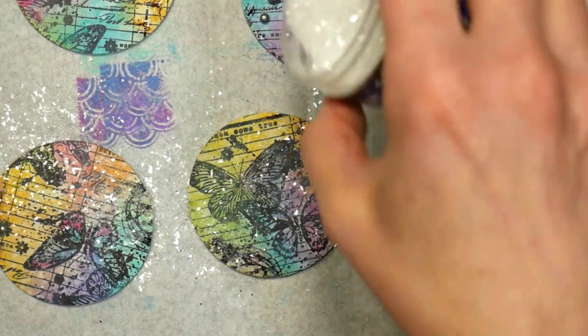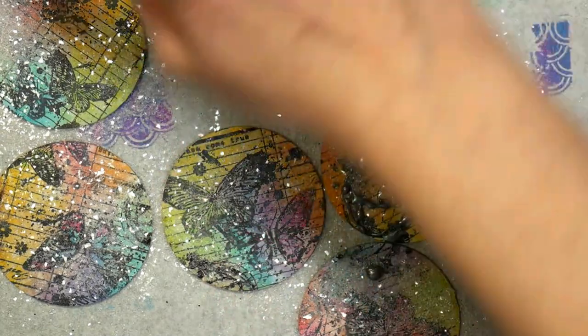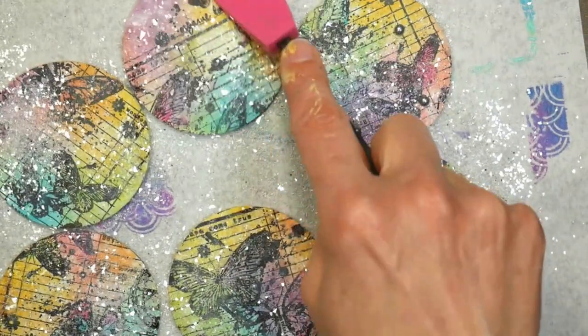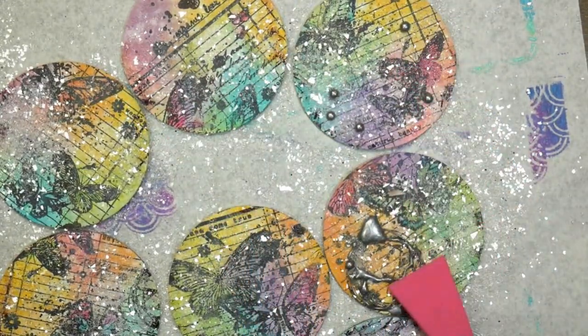I'm sprinkling glitter onto the wet glue over a piece of paper so I can easily dump the glitter back into the receptacle when I'm done. I'm using a silicone tool to make sure I have all that glitter pressed into the glue firmly so it doesn't all come off when it's dry.